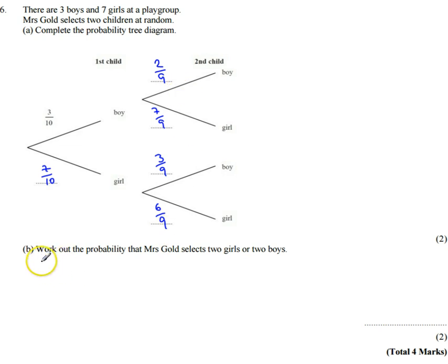So part B says, work out the probability that Mrs. Gold selects two girls or two boys. So the probability of her picking a boy followed by a boy is going to be equal to three tenths times two ninths.